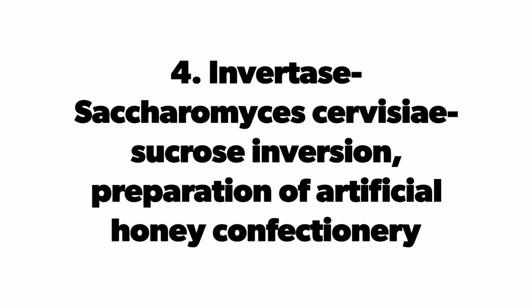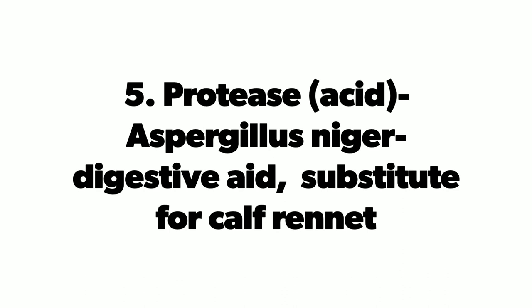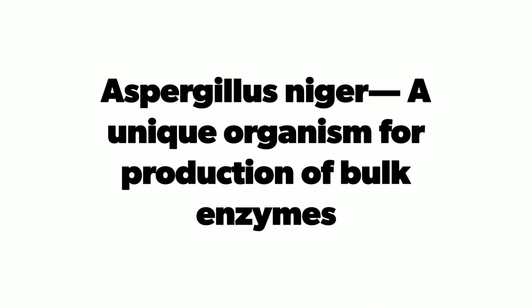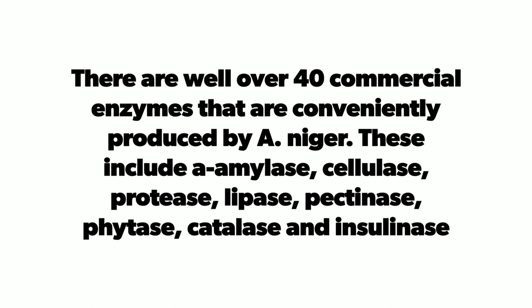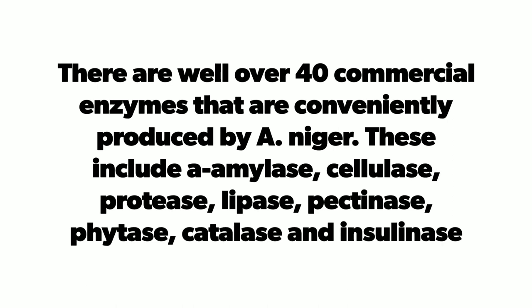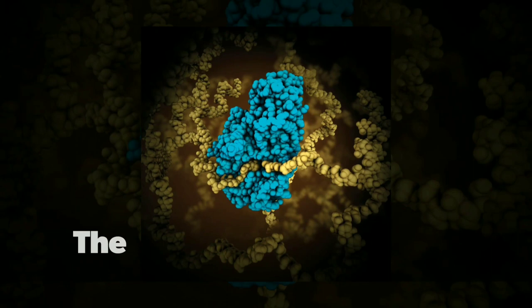Saccharomyces cerevisiae is a source of invertase enzyme, used for sucrose inversion and preparation of artificial honey. Aspergillus niger is also a source of protease enzyme, used as a digestive aid. Aspergillus niger is a unique organism for the production of enzymes — there are well over 40 commercial enzymes conveniently produced by it, including alpha-amylase, cellulase, protease, lipase, pectinase, and others.